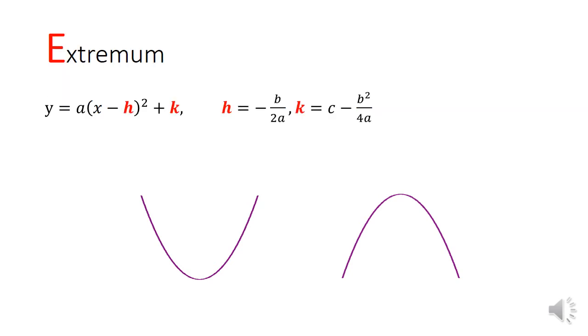Now to find the extremum, which is a word that just means the maximum or minimum value of a function, we put the previous pieces of knowledge together. Since the smallest square number is zero, the extremum will always occur when x minus h is equal to zero. This is why x equals to h will also form the line of symmetry.